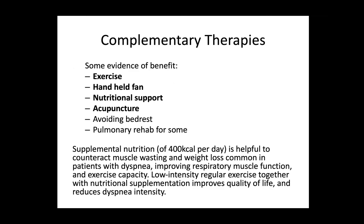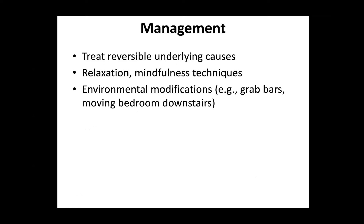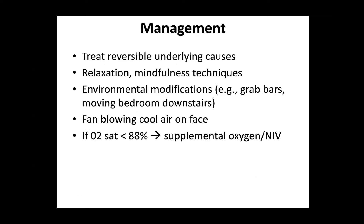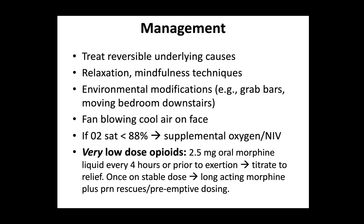There's some evidence of benefit for graded exercise, particularly when dyspnea is due to deconditioning. Handheld fans blowing a breeze across the seventh facial nerve — cranial nerve — help. Nutritional support has some benefit, acupuncture has some benefit, and some people benefit from pulmonary rehab. But if someone is feeling like they're suffocating, the first thing to do is give them a little opioid and see if you can make them feel better. Treat underlying causes, breathing relaxation and mindfulness techniques, environmental modifications, fans, and oxygen if saturation is below 88%.